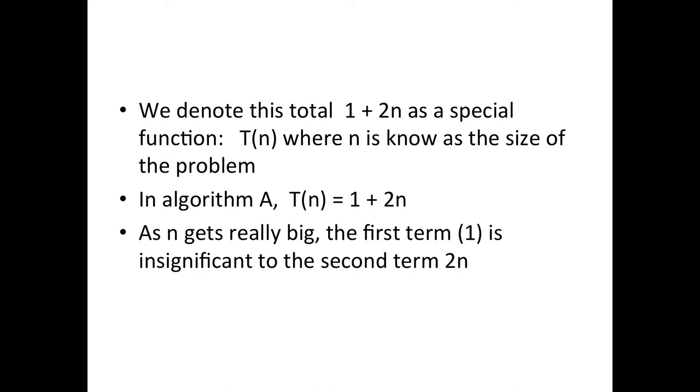We're not interested in the multiplier 2 or the coefficient either. We can just get a computer that runs twice as fast to fix that. So we can say that this n characterizes how long this algorithm takes. It's relative to n or proportional to n.